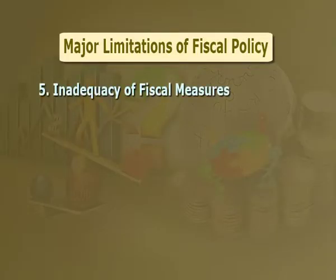Number five: inadequacy of fiscal measures. In anti-depression fiscal policy, the expansion of public spending and reduction in taxes are always important elements. The question is whether a specific variation in public spending or taxes will bear the desired results. If the injections or withdrawals from the circular flow are more or less than what is required, the system will fail to move in the desired direction, resulting in exaggeration of instability in the economy.